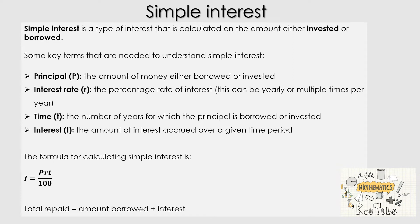Let's begin by looking at simple interest. Simple interest is a type of interest that is calculated on the amount either invested or borrowed. Some key terms are needed to understand simple interest. The first is the principal, which we use a capital P to represent — that is the amount of money either borrowed or invested, depending on the context of the question.